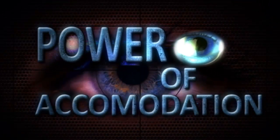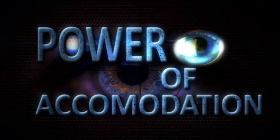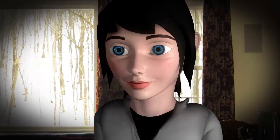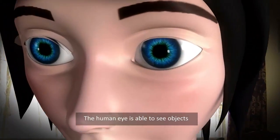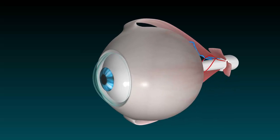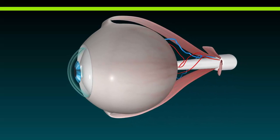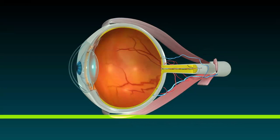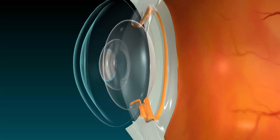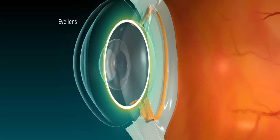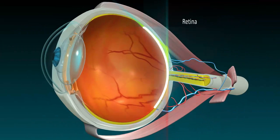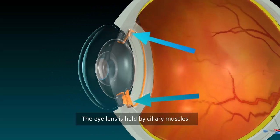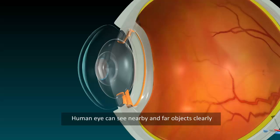Power of accommodation. The human eye is able to see objects with the help of the lens and retina. The lens is held by ciliary muscles. A normal human eye can see nearby and far objects clearly.